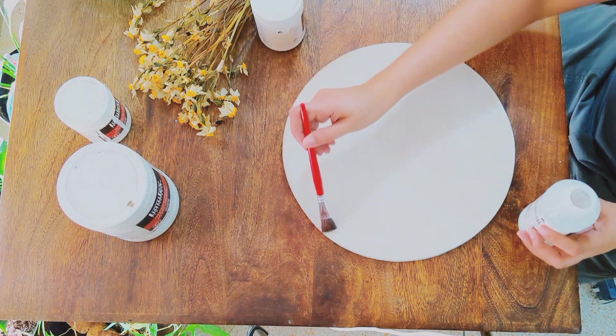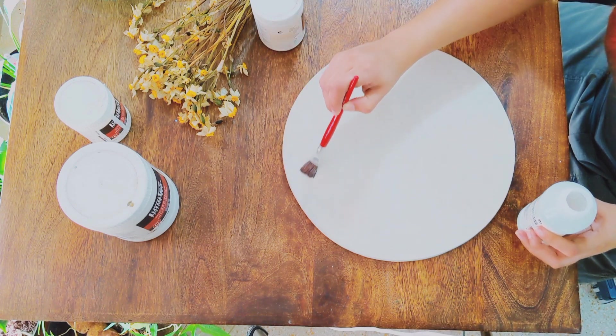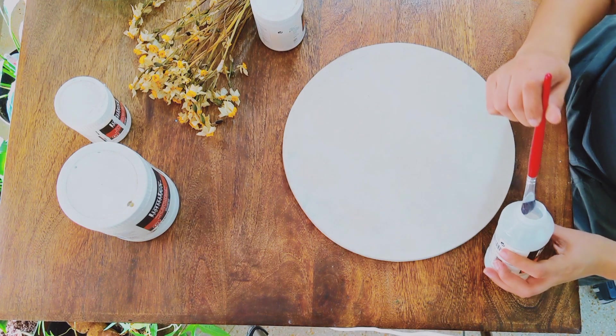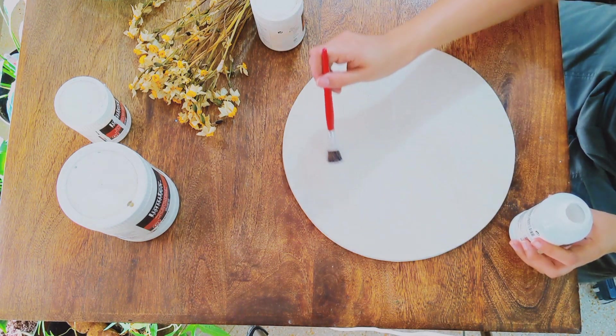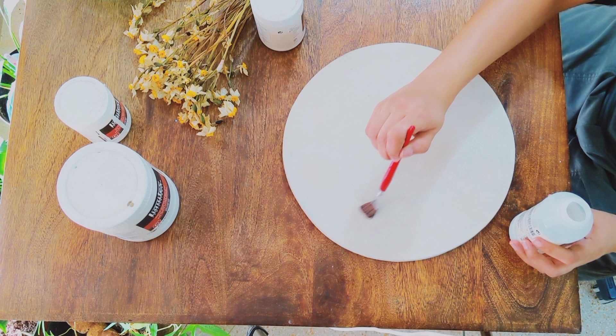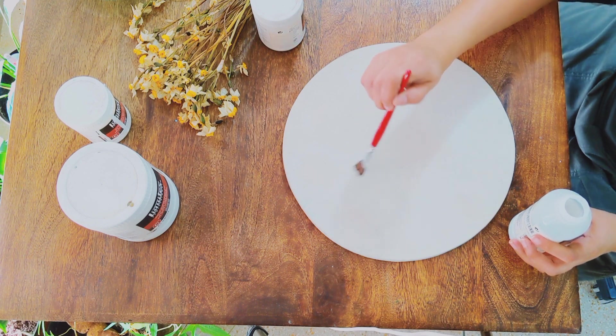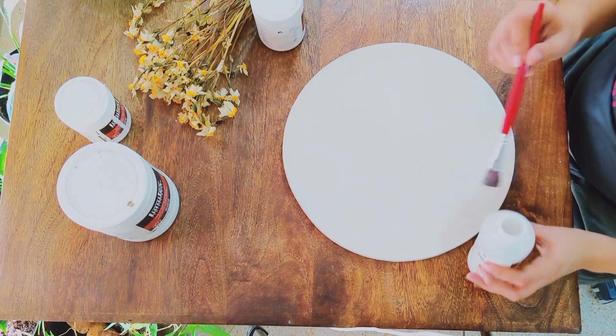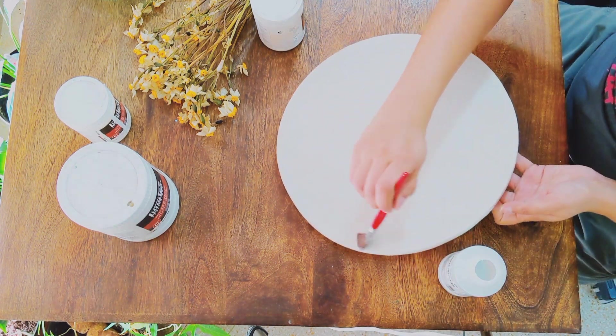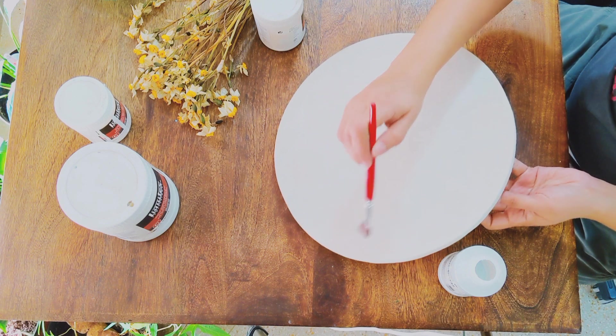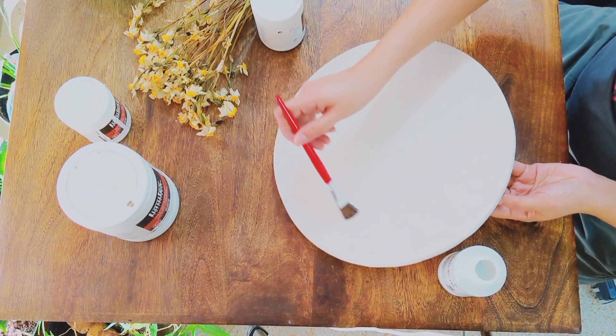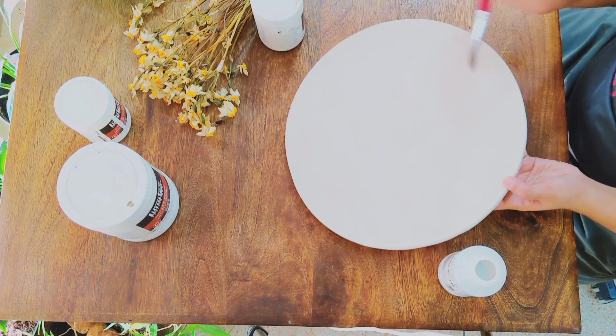Because it's cloth it will absorb the varnish pretty quickly, which is fine, it's not a problem. Just FYI in case you have other things planned and you're not sure how the surface reacts. I generally hold it up like this, and because I'm sitting in front of curtained windows there's some light coming in, it gives me an idea of coverage.